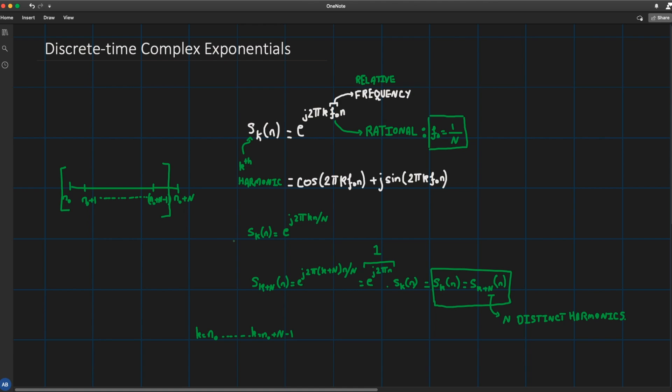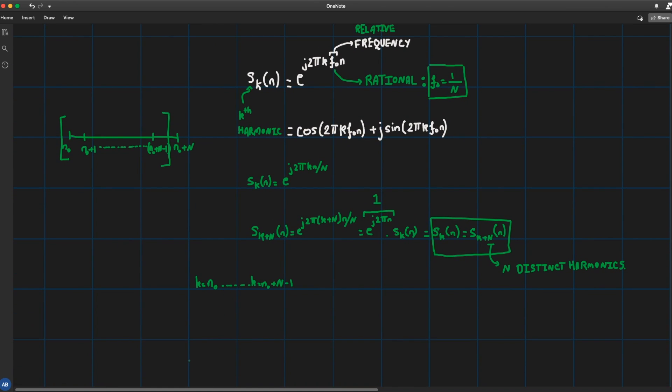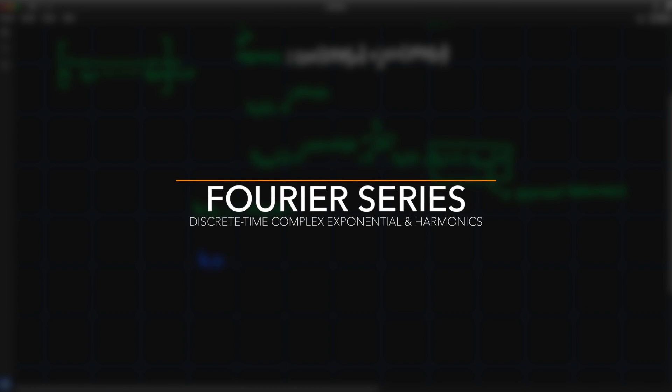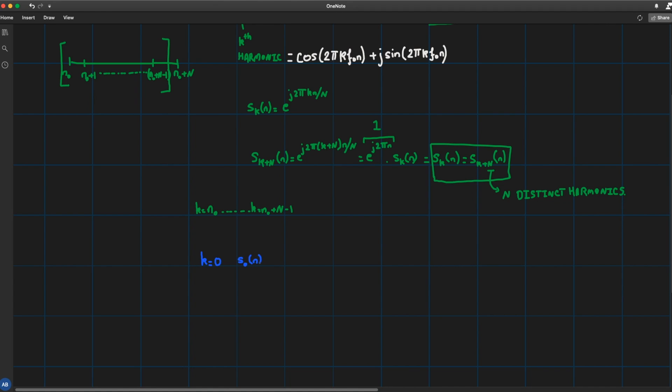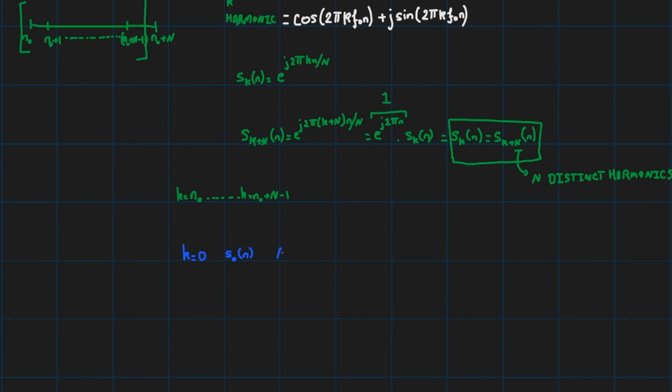It's because again since all have the same period that is 1 over f₀, then we're going to combine them as we did in the previous lecture. So starting from k equals 0 I have the signal s₀(n) of possible period N, k equal 1 I've got the signal s₁(n) with possible period N down to the N minus 1 harmonic with possible period N.